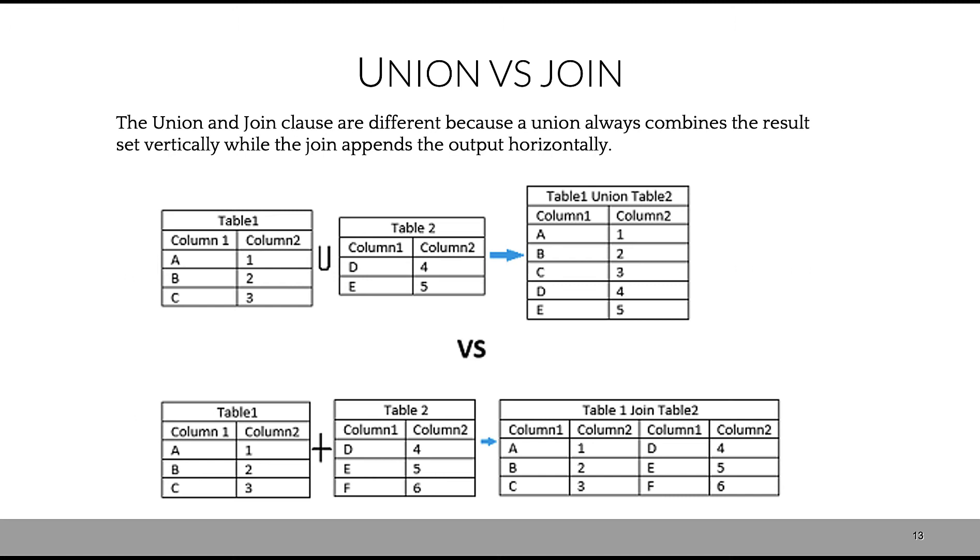To summarize the difference between union and join: union combines results vertically. These two tables—a1, b2, c3, etc.—all combine vertically. The attributes must be the same. In join, join appends relations or output horizontally. The best way to remember would be: think of union as a combination of results in a vertical and long table, and join will be horizontal or a wide table.